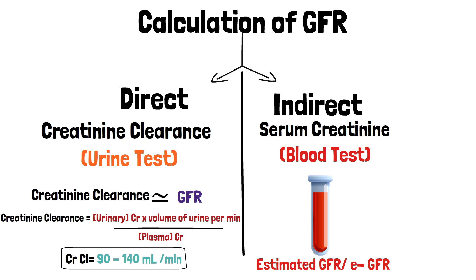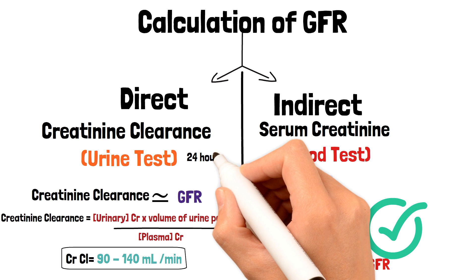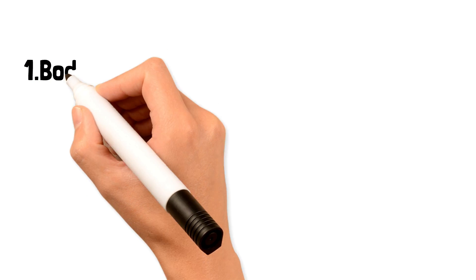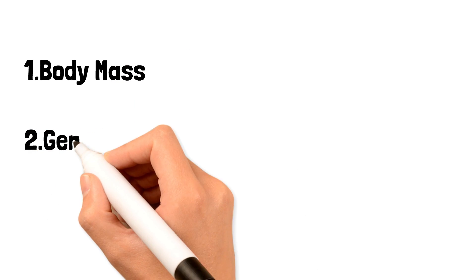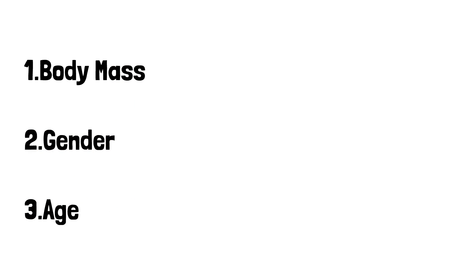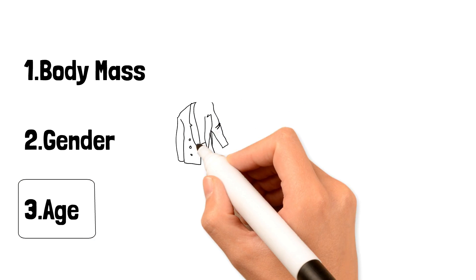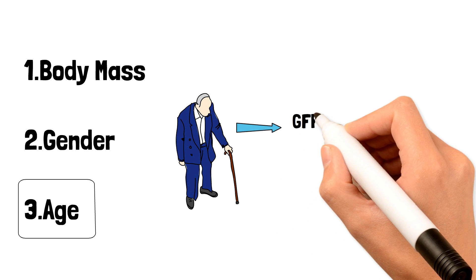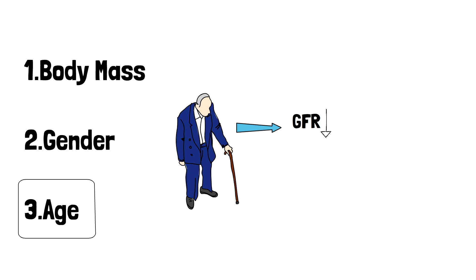For practical reasons, the blood test method for GFR is used far more often than the 24-hour urine collection test for creatinine clearance. Several factors like body mass, gender, and age can influence the value of creatinine clearance or GFR. The most important factor is age — creatinine clearance or GFR decreases by about 1 milliliter per minute per year after the age of 50.